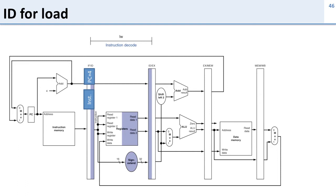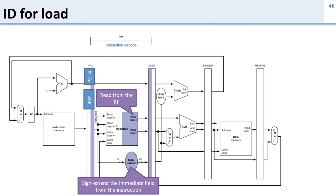Now here's the ID or instruction decode stage. We're going to take the information we had before and read from the register file, using the instruction waiting in the pipeline register to figure out what data to read. We're also going to take that instruction and calculate the sign extended immediate value. In our next pipeline register, we're going to keep the PC plus 4 and the instruction because we need them later, plus the two values read from the register file and the sign extended immediate.